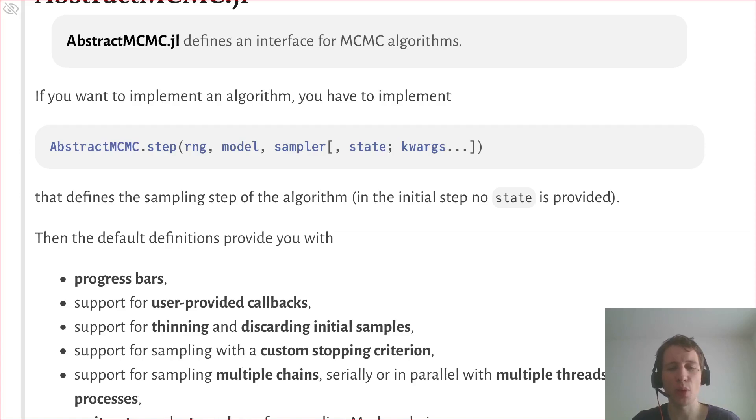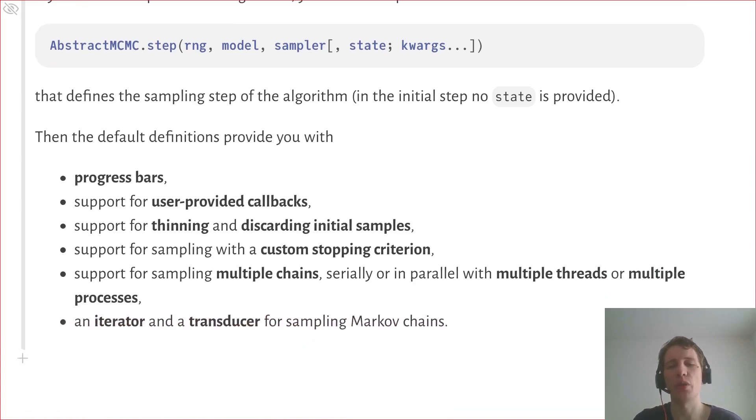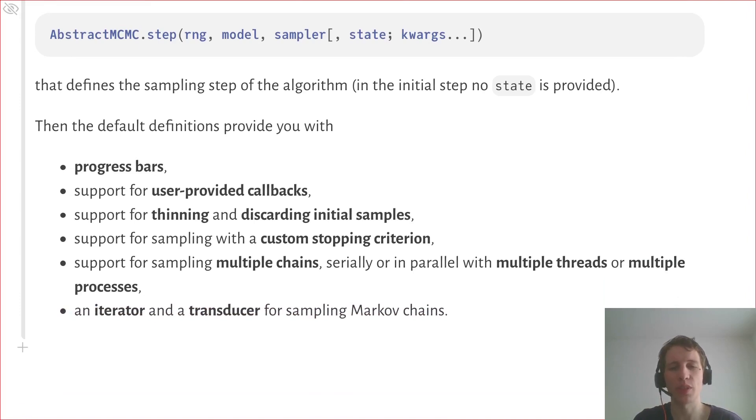You get, for example, progress bars for free, or you can sample multiple chains in parallel with multiple threads or processes. And in elliptical slice sampling we get all these features for free.